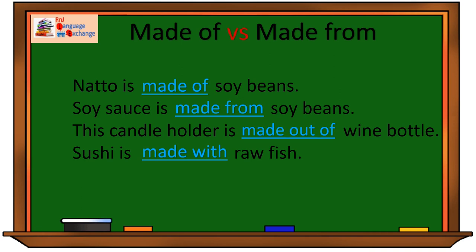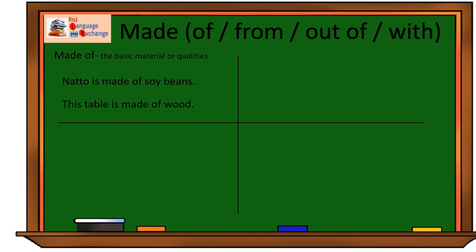Let's take a look at how we got the answers. The first one is made of. Made of is used when we talk about the basic material or qualities of the material. In our example, natto is made of soybeans. One good thing to remember is that we can still see the material used.